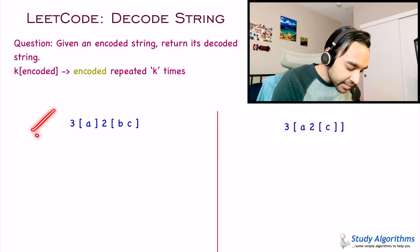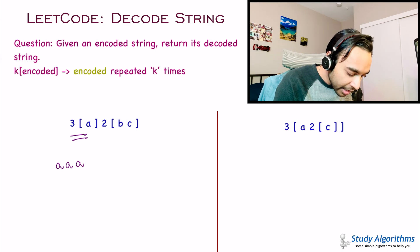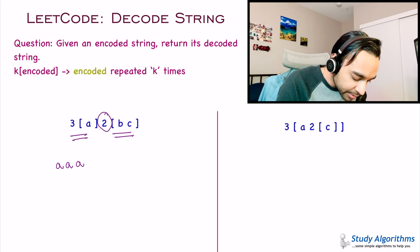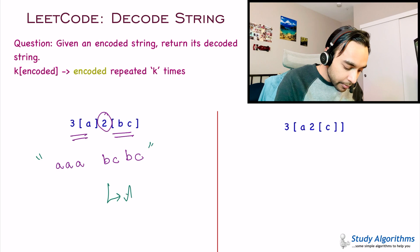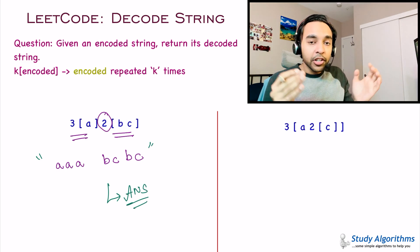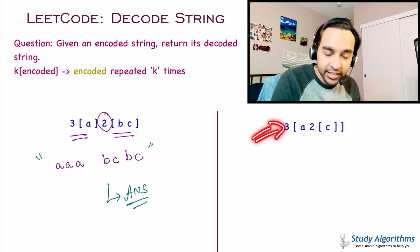For our first test case, when I apply this formula, I see 3[a], which expands as a, a, a, and then I have 2[bc], so that expands as bcbc. So for test case number 1, that string will be your answer. Now since there are brackets, you can have brackets inside of brackets, and that is shown in our test case number 2.